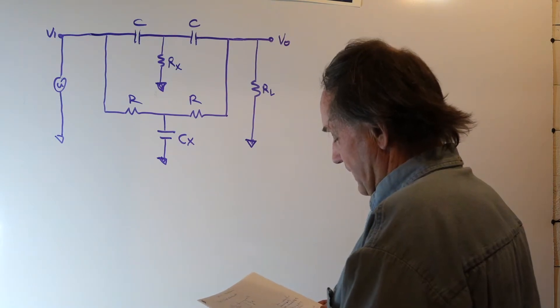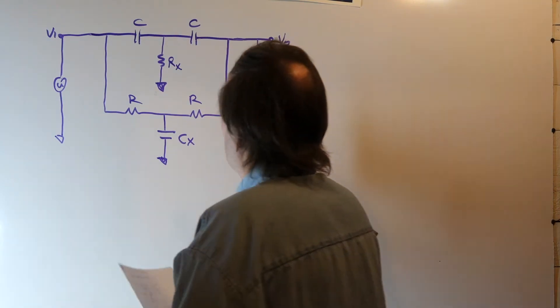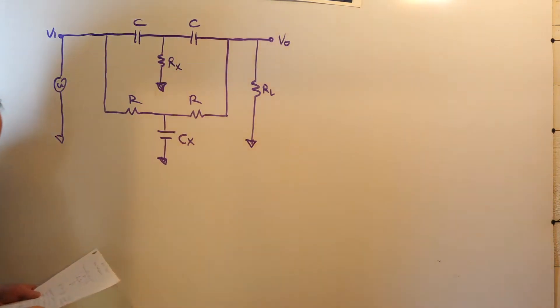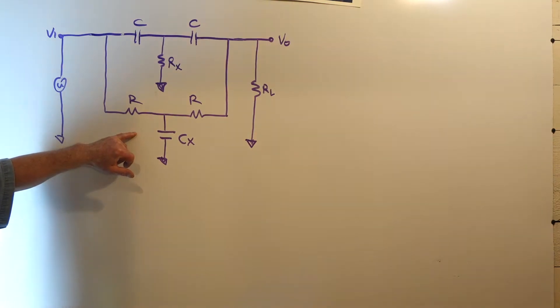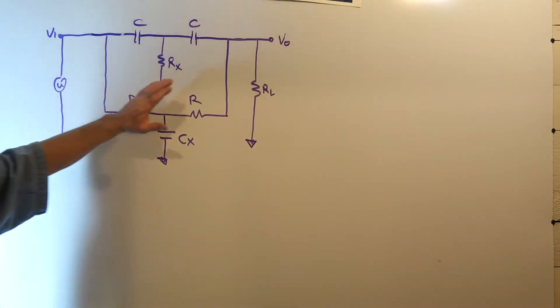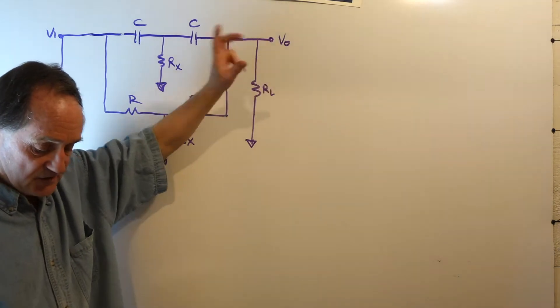The question is: what do the values of RX and CX need to be in terms of R and C so that the output voltage is zero.